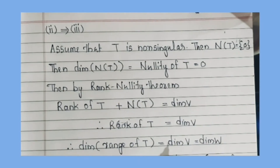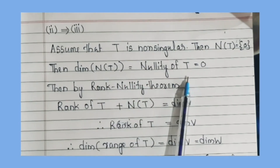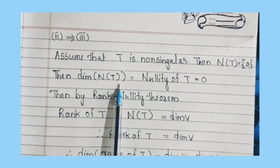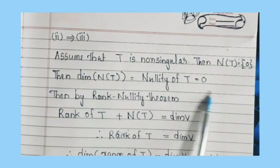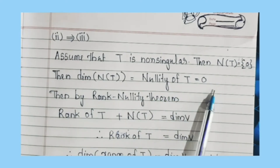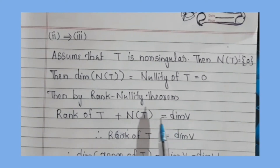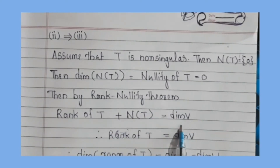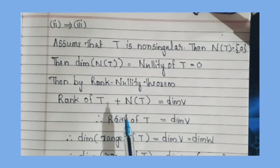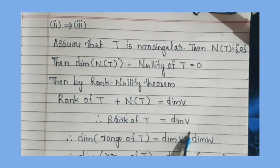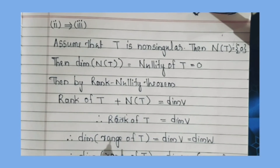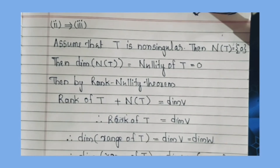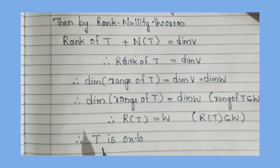To prove 2 implies 3: since N(T) = {0}, the nullity of T equals 0. By the rank-nullity theorem, rank of T plus nullity of T equals dimension of V. Since nullity is 0, rank of T equals dimension of V, which equals dimension of W. Therefore dimension of range of T equals dimension of W, which gives R(T) = W. Therefore T is onto.